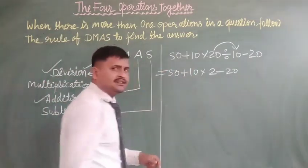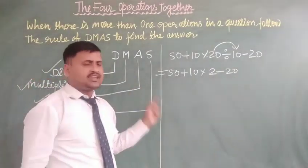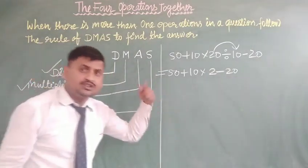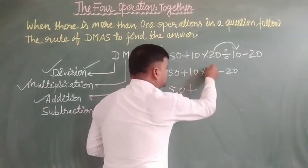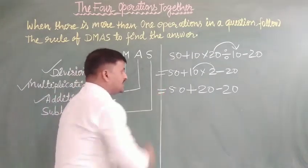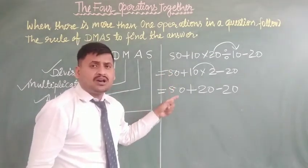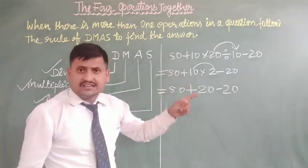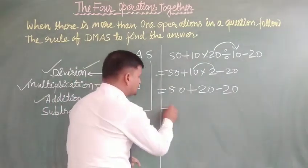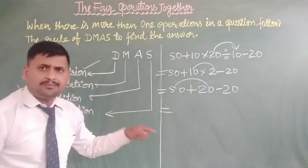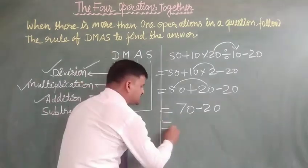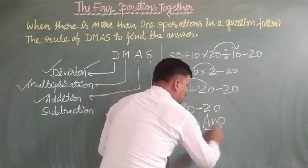The second work is multiplication. We have covered multiplication. The first work was division and the last is subtraction. So: 50 plus 10 by 10 and minus 20. The first and second work will be completed. First work is your division, second work is your multiplication, and the rest of the two works are addition and subtraction. Third work addition: 50 plus 20 is equal to 70. And 70 minus 20 is the last and fourth work.